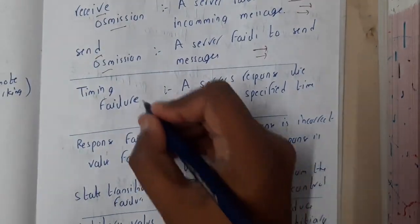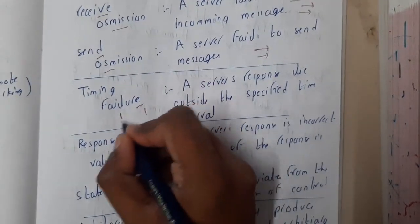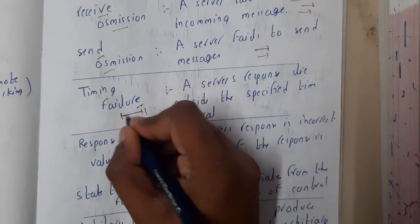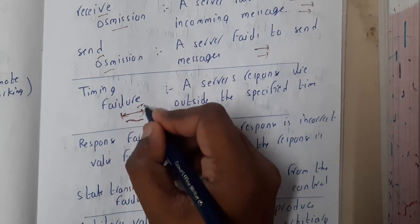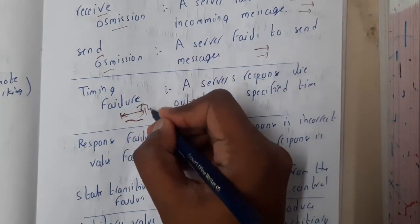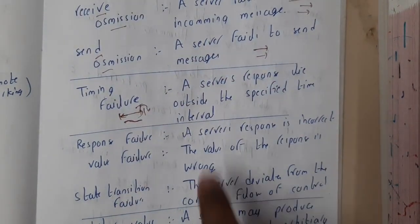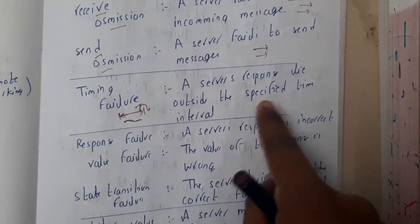Similarly, timing failure. Basically, assume that there is a deadline given for you, like a project or anything. They gave three hours to code in your examination. You coded, you submitted the code, but it was late. So that is timing failure: a server responds outside the specific time interval, not in the time interval but outside.